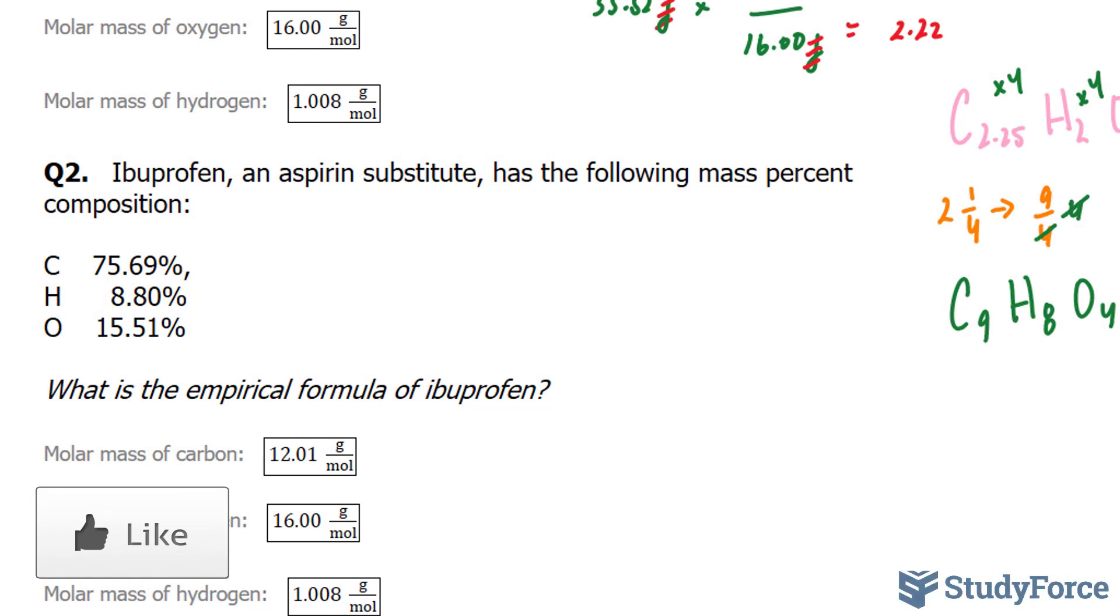Now instead of using percentages as given in the question, what I can do is assume that there is 100 grams of ibuprofen. If there are 100 grams of ibuprofen, that means there are 75.69 grams of carbon, this much of hydrogen, and this much of oxygen. And if I use this assumption, what I can do next is multiply this number by the molar mass. Look at the molar masses for carbon, oxygen, and hydrogen. They're all configured in such a way where the grams are at the top and the moles are at the bottom. What I have to do is multiply these numbers by the flipped version of each of these molar masses.